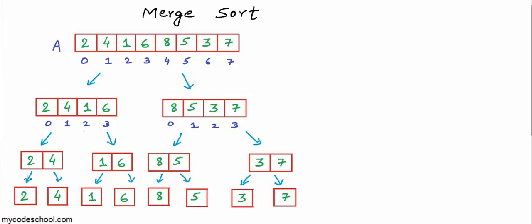Now at this stage we can start combining back — merging the sub-lists. We will depict sorted sub-list cells in green. Sub-list 2, 4 will still be the same after merging. Sub-lists 1 and 6 — two sub-lists with only one element each — will also merge. Now we can merge 2, 4 and 1, 6.